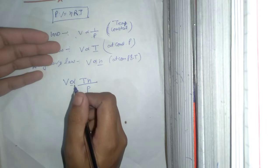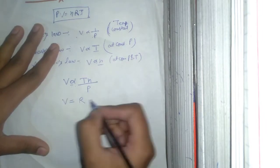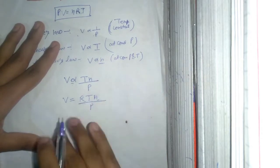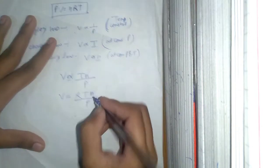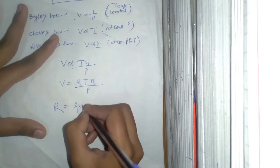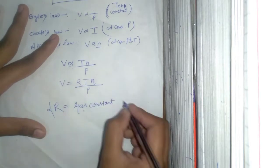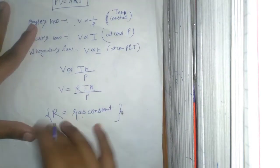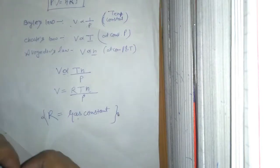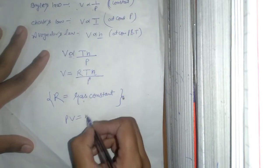When we combine them, V is directly proportional to T and n, and inversely proportional to pressure. When you remove the proportionality sign, V is equal to R times T times n over P, where R is called the gas constant.